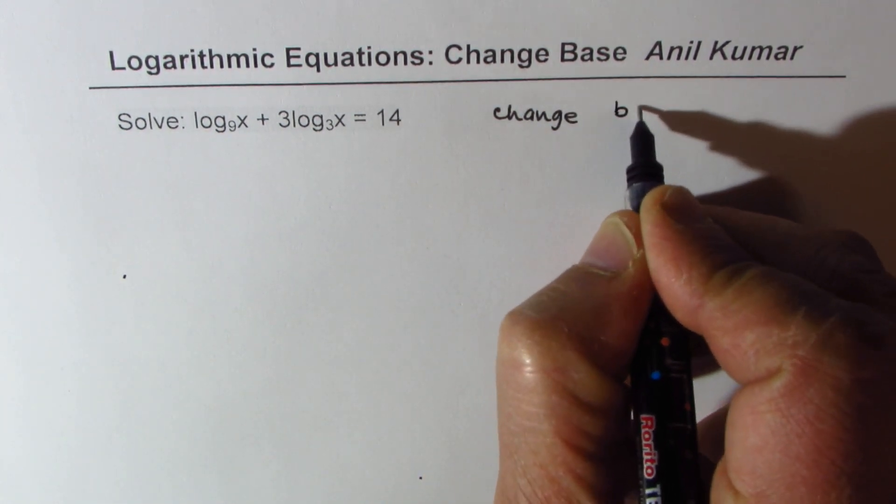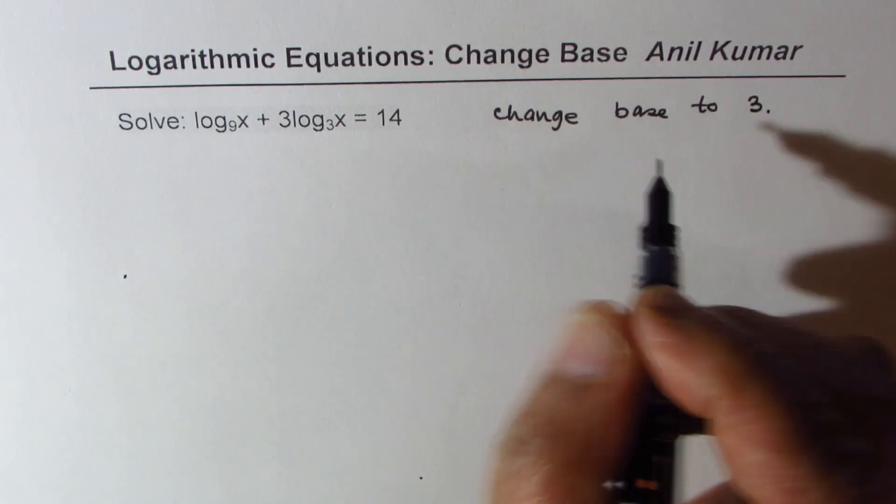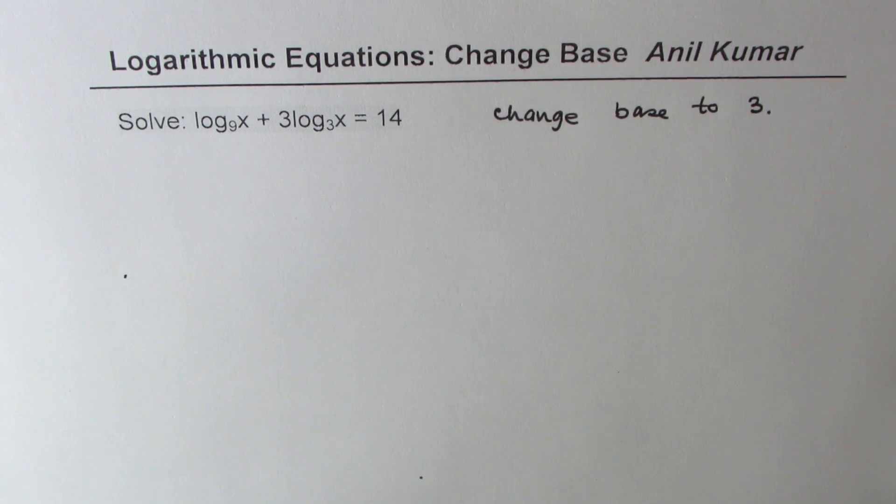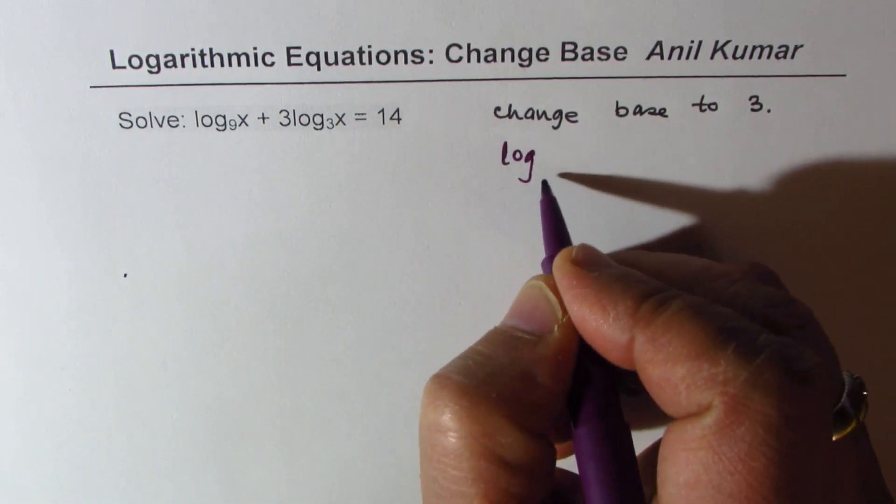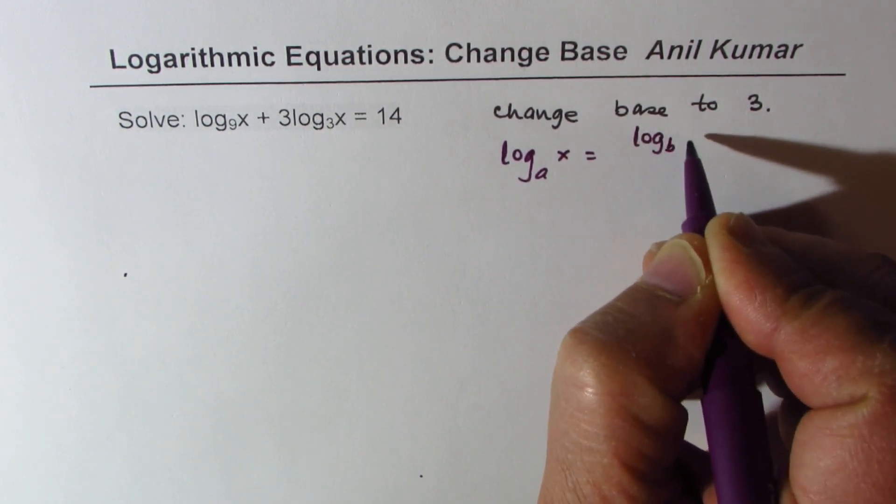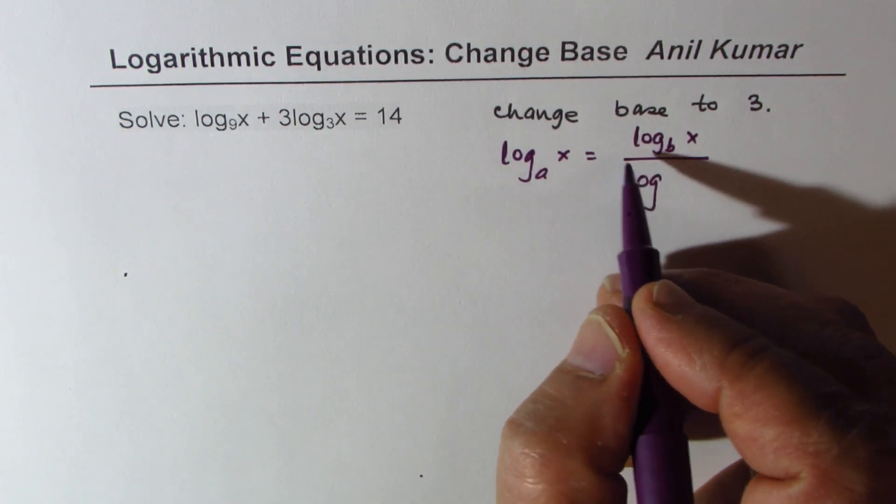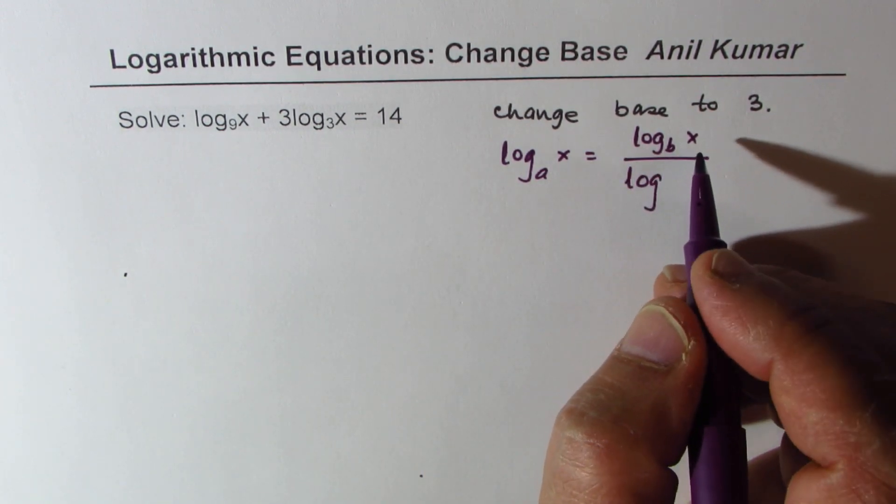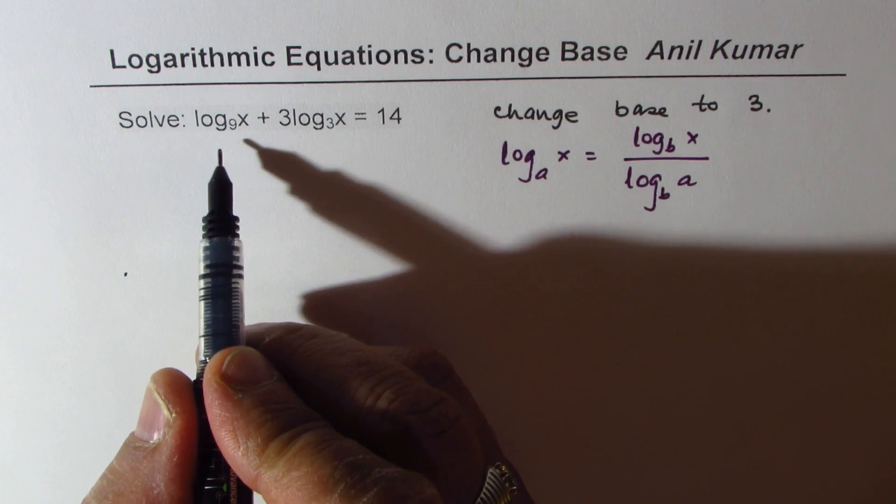Change base to 3. We'll use the formula: if you have log base a of x, you can change the base to b by using the formula log_a(x) = log_b(x) divided by log_b(a). In this case, since we want to change the base to 3, we could write...